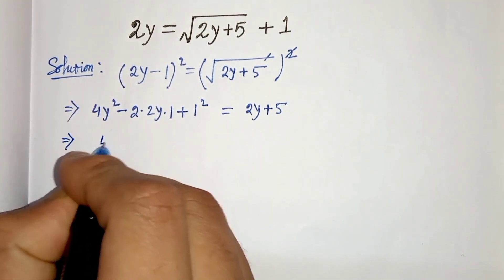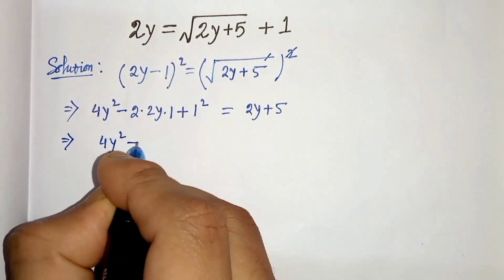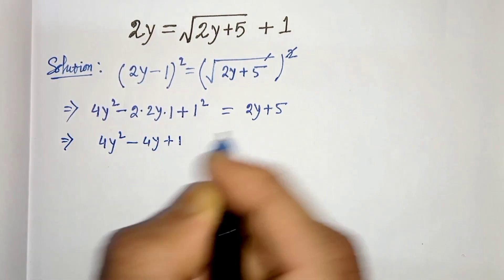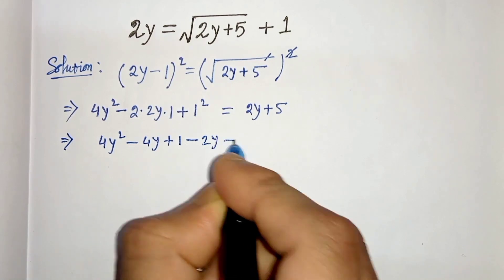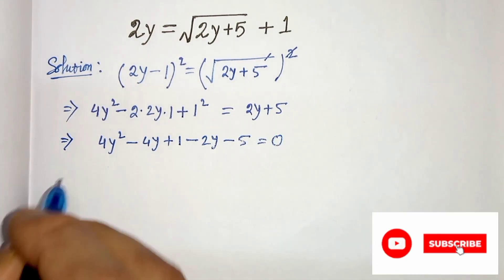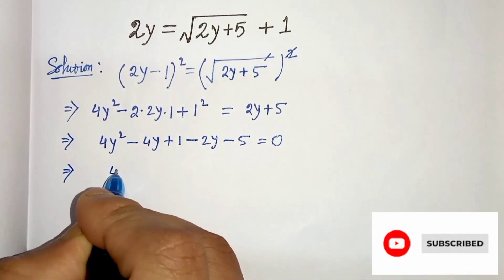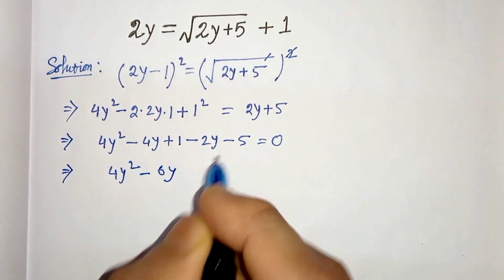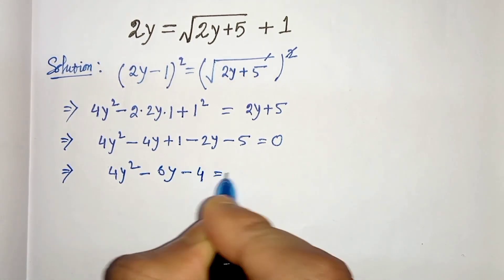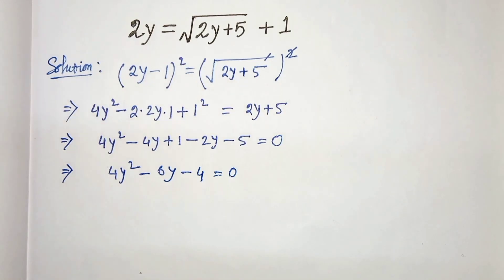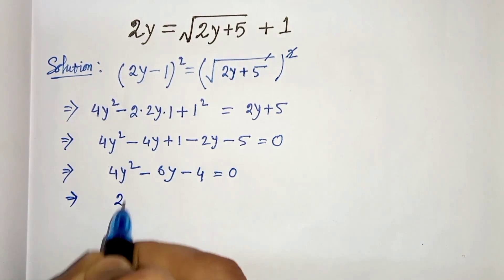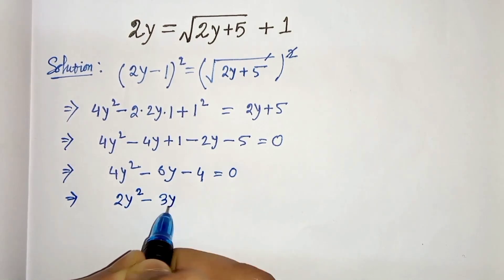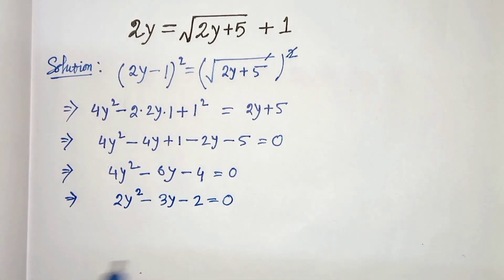In the next step we write 4y² minus 4y plus 1 minus 2y minus 5 equals 0. Combining like terms: 4y² minus 6y minus 4 equals 0. Now dividing through by 2, we get 2y² minus 3y minus 2 equals 0.